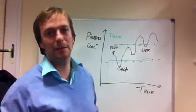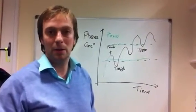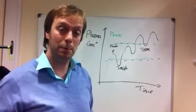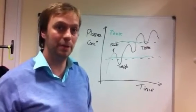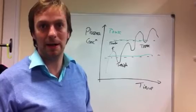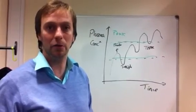If your trough level is too high and in the toxic zone, what we'd actually do is increase the spacing of the dose. So say you're administering it every six hours, we might reduce that to every eight hours, every twelve hours or so.